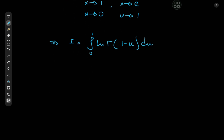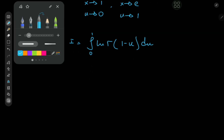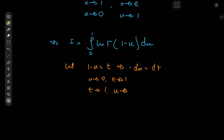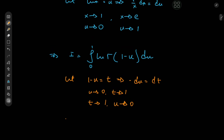What I'm trying to say is that what I'm about to do might work. We're going to let 1 − u = t, which implies that −du = dt. As u approaches 0, t approaches 1, and as u approaches 1, t approaches 0 — so the limits are switched. We then have I = −∫₁⁰ log·Γ(t) dt.